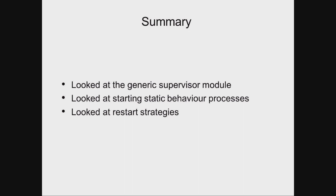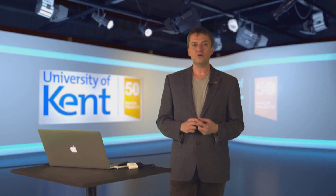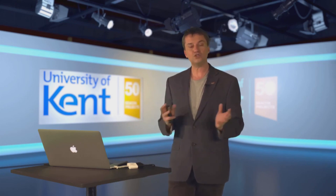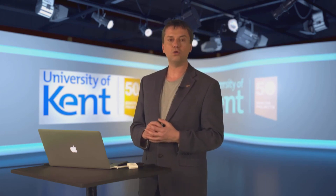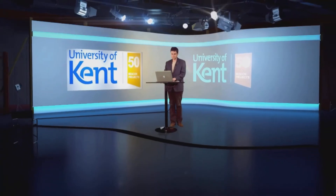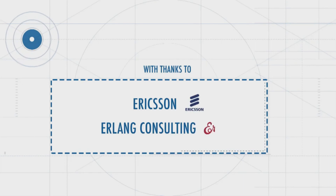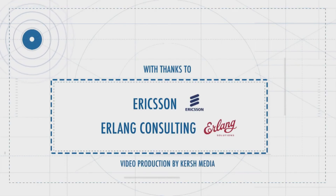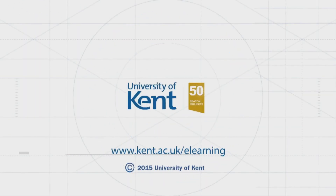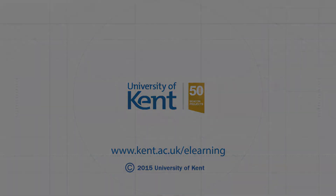In this section we've looked at the generic supervisor module, including restart strategies and static children. What we have not covered are dynamic children — the ability of a supervisor to start and stop children during runtime — and the simple-one-for-one strategy, which is often associated with many dynamic processes of the same type that come and go during runtime. In the next section, we will look at how to package a supervision tree into a building block called an application.